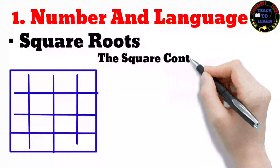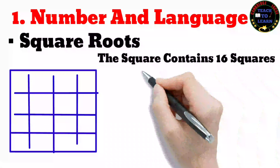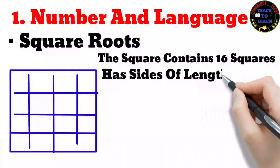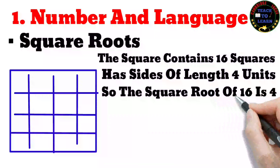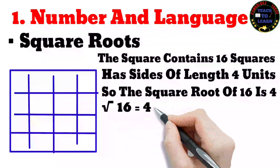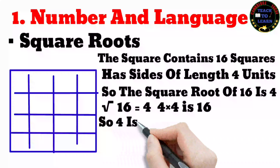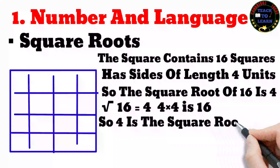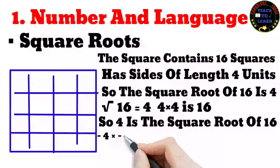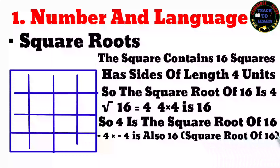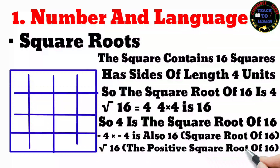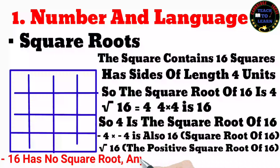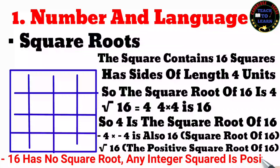The square root of 16 is 4, written as √16 = 4. Note that 4 × 4 = 16, so 4 is the square root of 16. However, (−4) × (−4) is also 16, so −4 is also a square root of 16. By convention, √16 means the positive square root, so √16 = 4, but −4 is also a valid square root. Note that −16 has no square root since the square of any integer is positive.